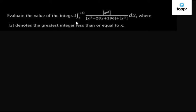Evaluate the integral from limits 4 to 10 of the function: greatest integer of x squared divided by greatest integer of x squared minus 28x plus 196, plus greatest integer of x squared, dx.